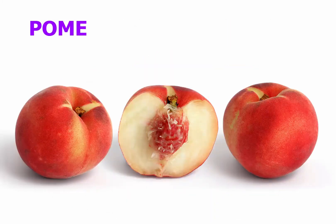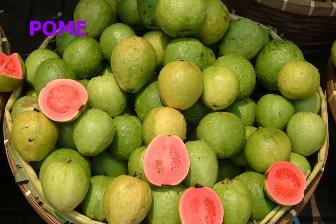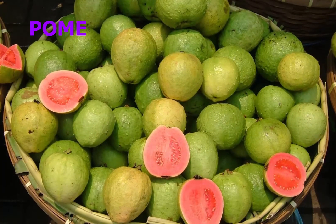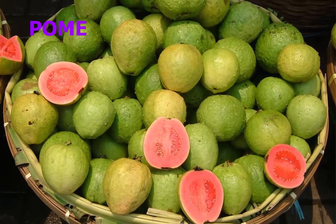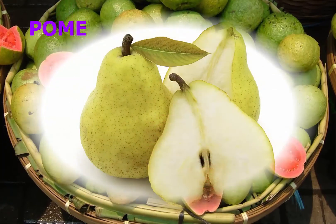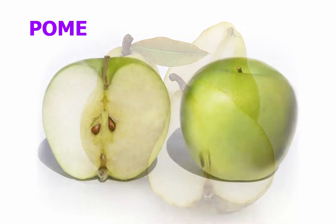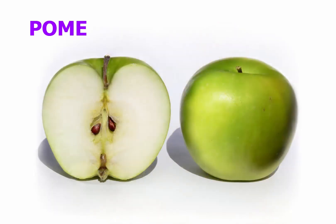Pomes are simple fleshy fruits derived from the enlarged floral tube or receptacle that grows up around the ovary. The endocarp around the seeds is papery or leathery. Examples include apples and pears. In an apple, the ovary consists of the core and a little adjacent tissue.